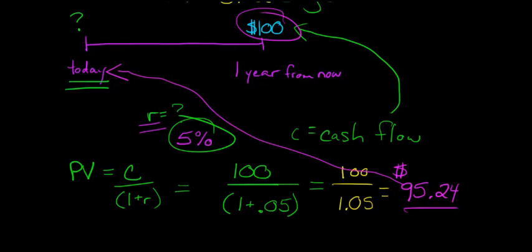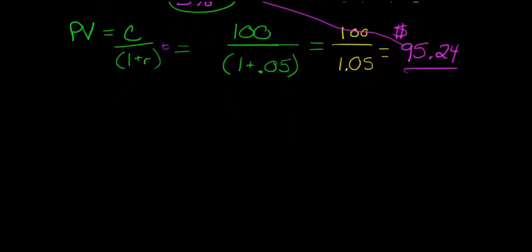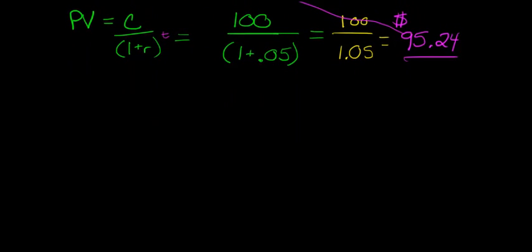Now you might think: what if we have a situation where it's more than one year from now? What if it's maybe 5 years from now — can we still use this formula? We're actually going to have to tweak it a bit and account for the number of time periods. We add a little t to the formula, where t represents the number of time periods. Let's say 10 years from now.